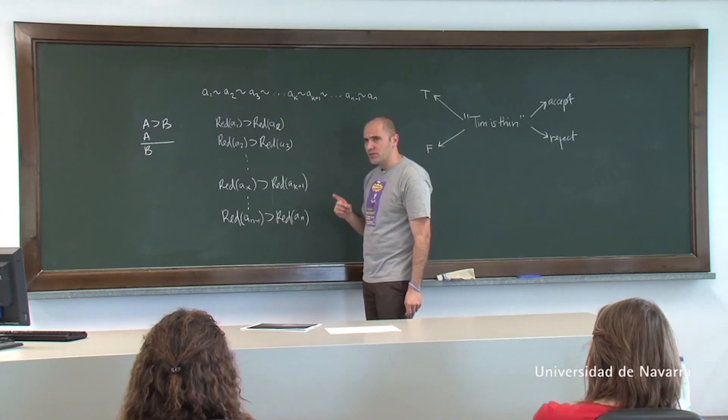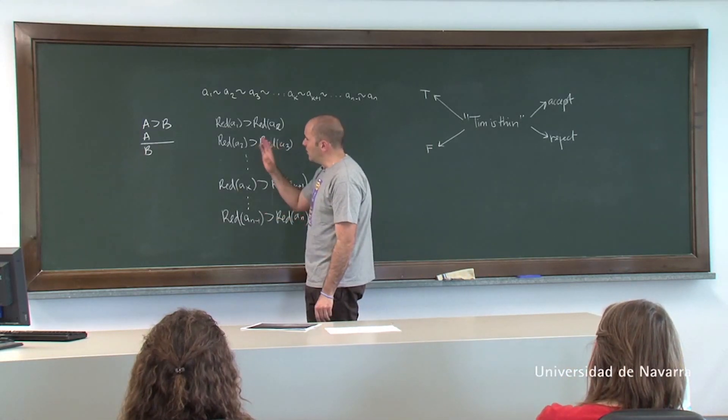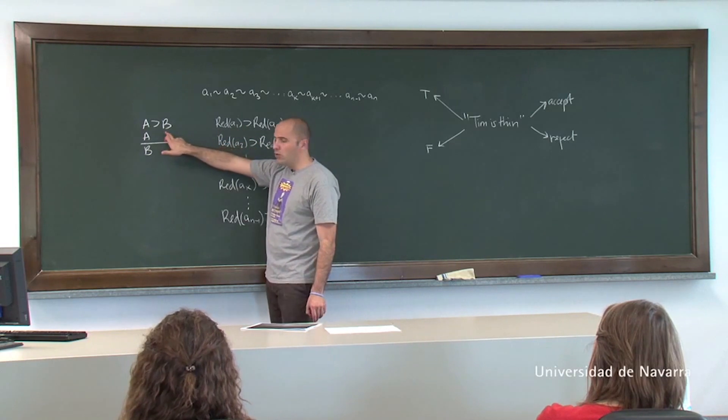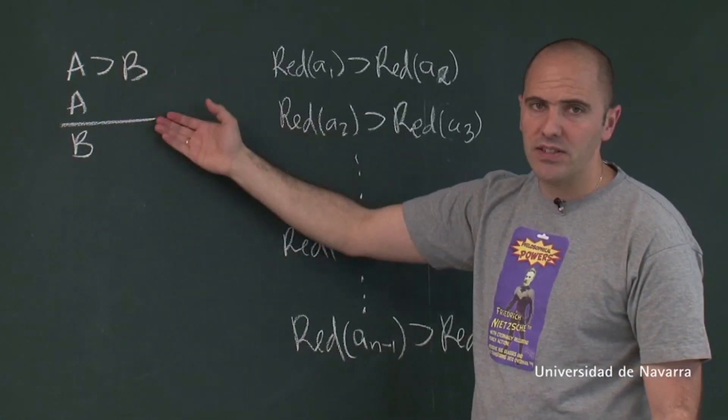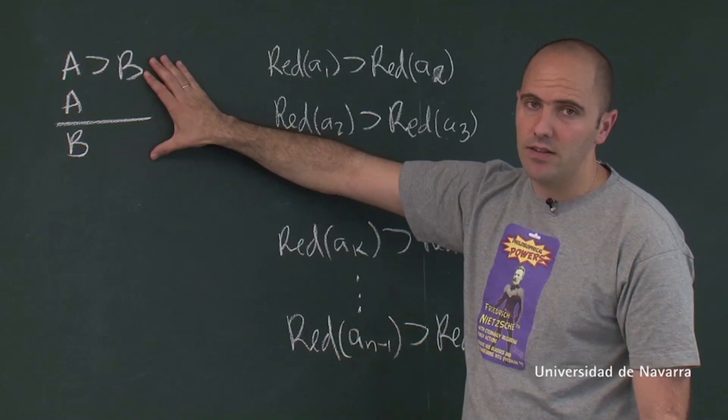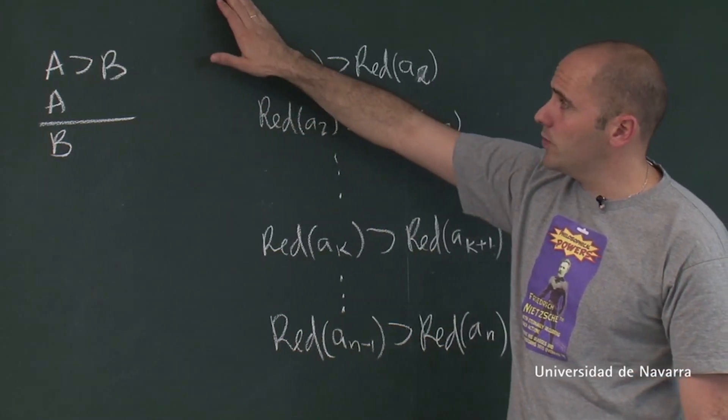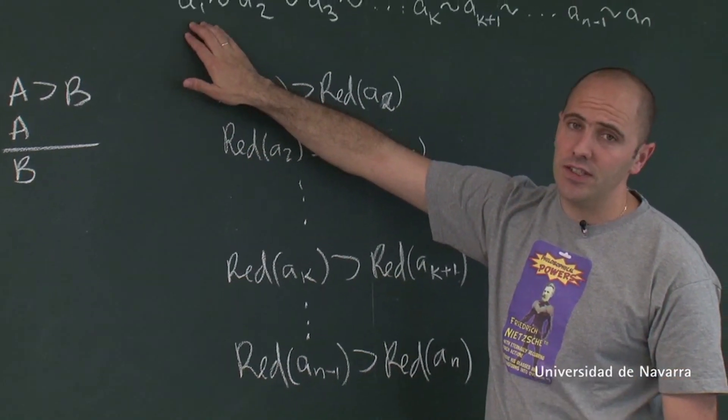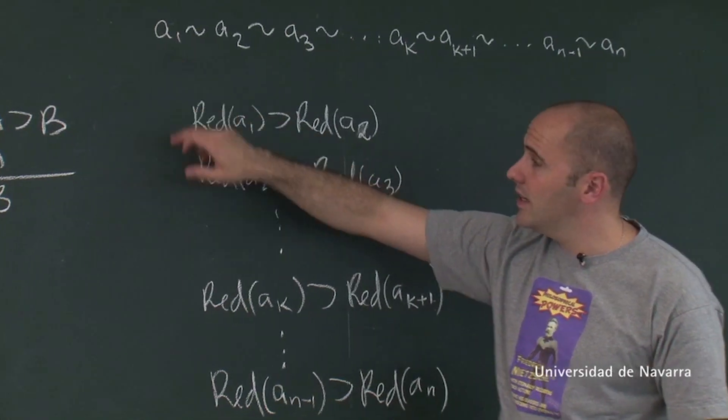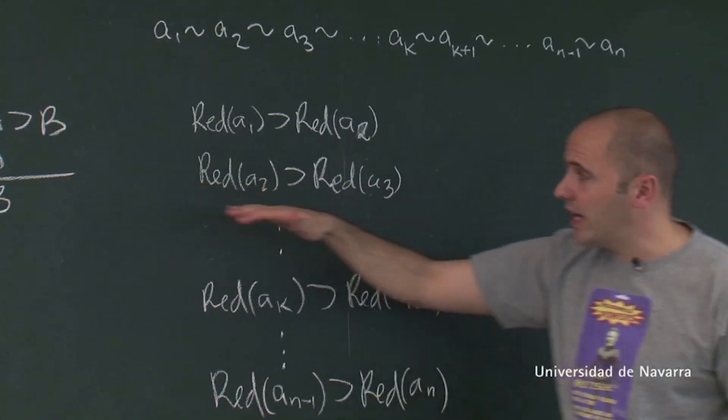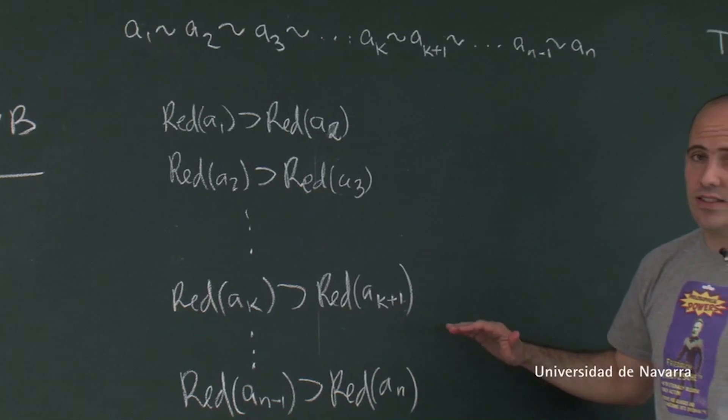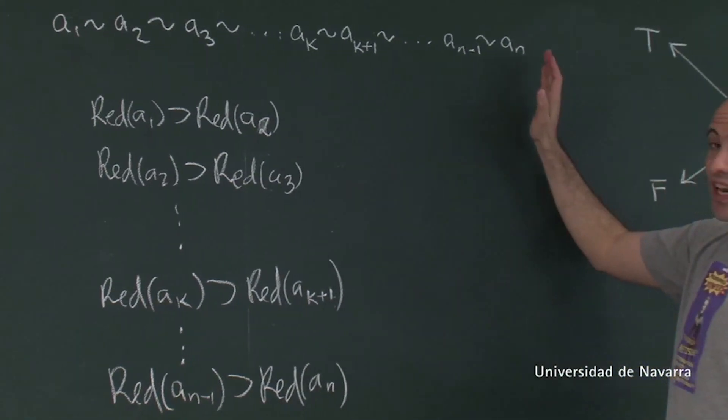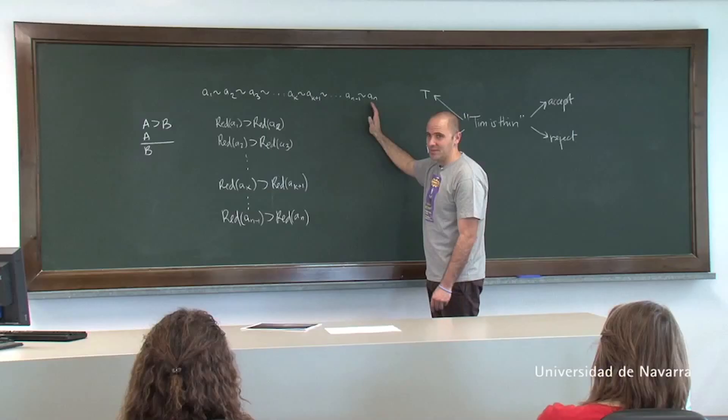Now the problem comes in classical logic with the fact that modus ponens, this pattern of inference, is classically valid. And so it follows from the fact that the first guy is red, and the validity of this rule that if all these conditionals are true, then the last guy is red as well.